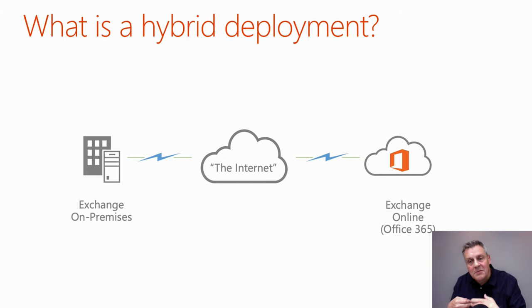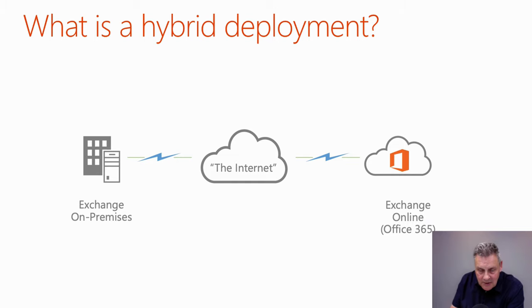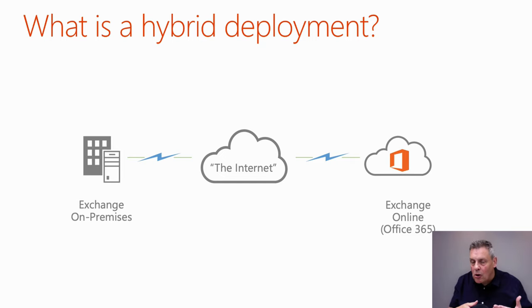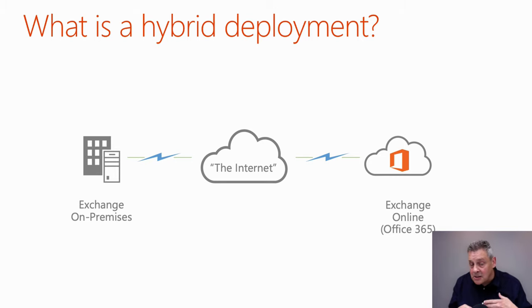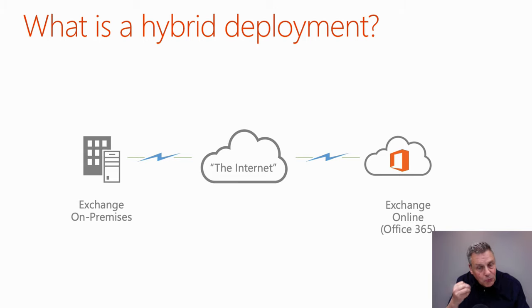With a traditional mailbox migration, users need to log into brand new mailboxes and re-enter credentials, which some users don't like. With a hybrid deployment, Exchange on-premises sees Exchange Online just as another server on the same network. That is really key — it's essentially a single virtual organization.